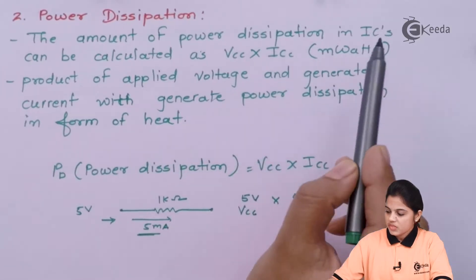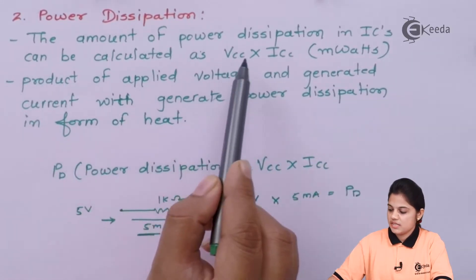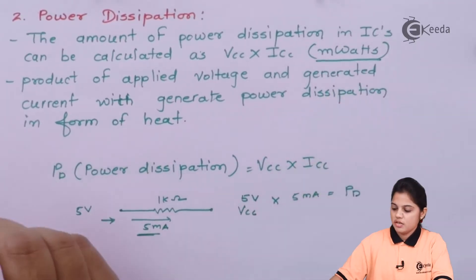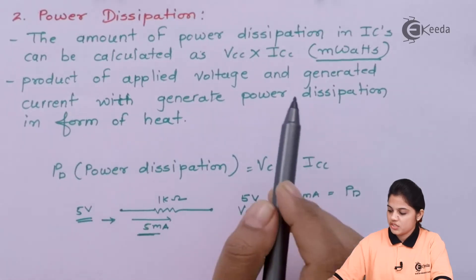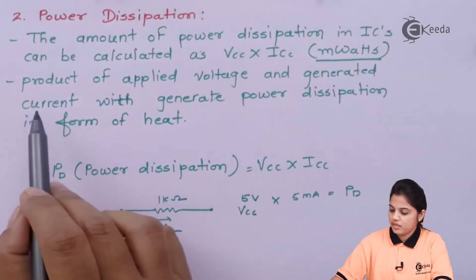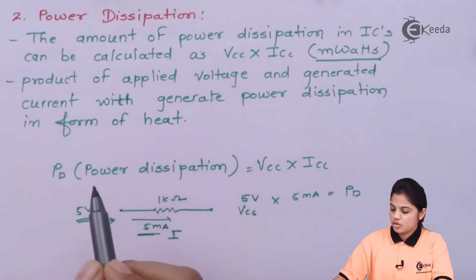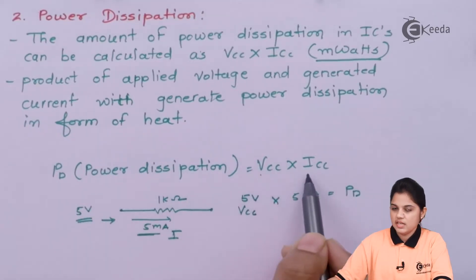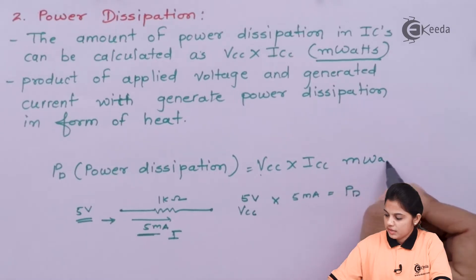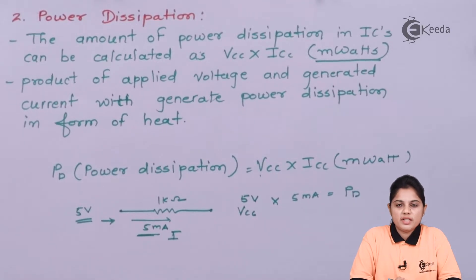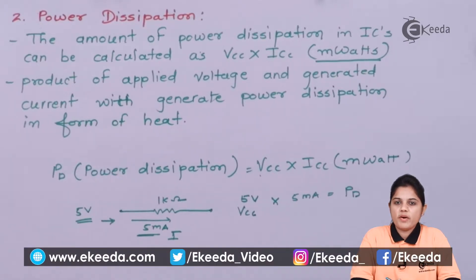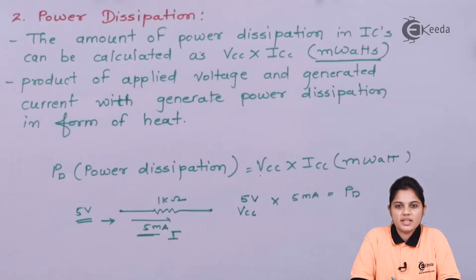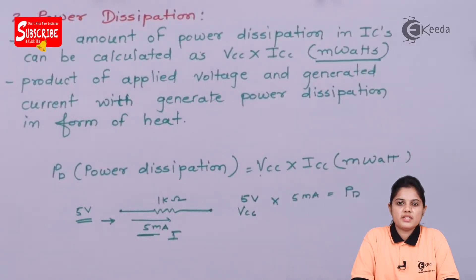The amount of power dissipation in ICs can be calculated as VCC multiplied by ICC, and this is always expressed in milliwatts. The product of applied voltage and generated current gives the power dissipation in the form of heat. Zero power dissipation is not possible, so the value should be as low as possible — remaining in the milliwatt range. If it increases beyond milliwatts, the device can no longer be used for the specific application. Power dissipation should always be taken into consideration while selecting a device.